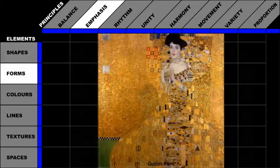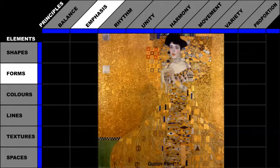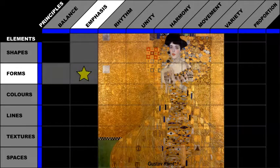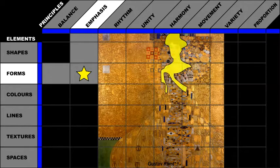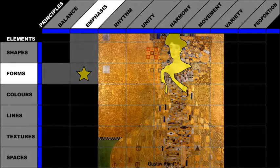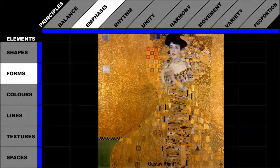Klimt used forms to create emphasis. He used shading to create the illusion of volume and forms, only in the area of the woman's face and hands. The rest of his painting is treated very differently, with flat shapes and patterning.